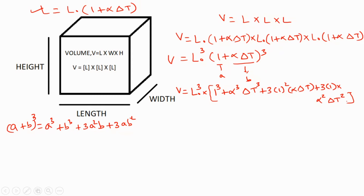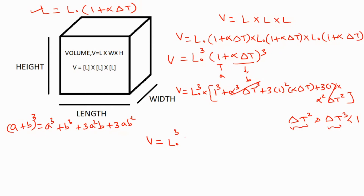The change in temperature is already a very small value, so higher-order terms of delta T become very very small. Delta T squared and delta T cube are all very very small — approximately equal to zero — so we can get rid of those terms. The equation then becomes V equal to L0 cube multiplied by 1 plus 3 times alpha delta T.